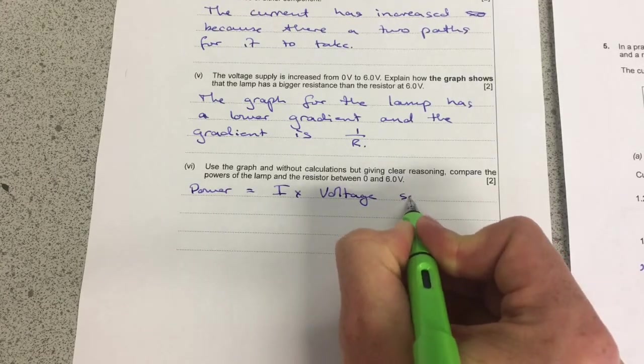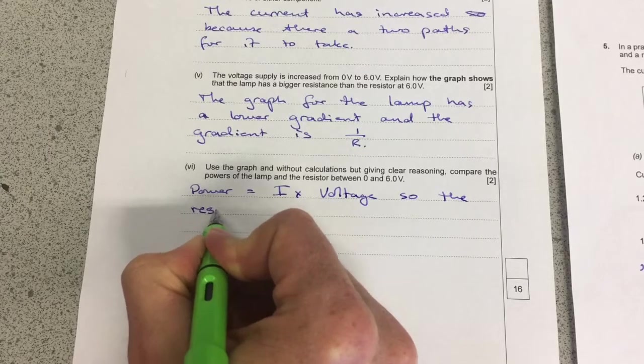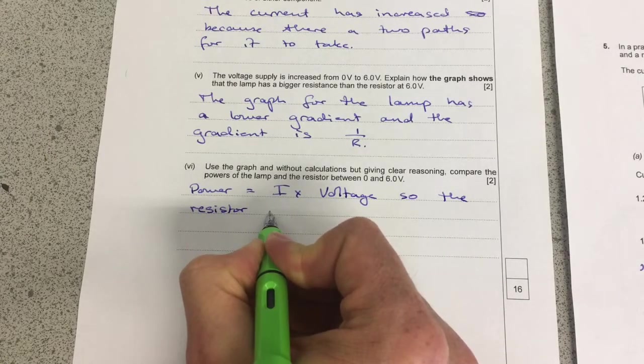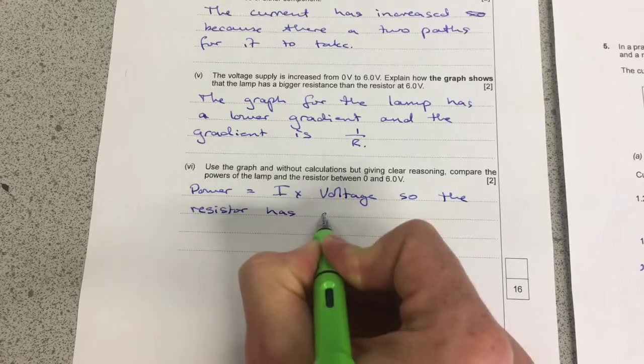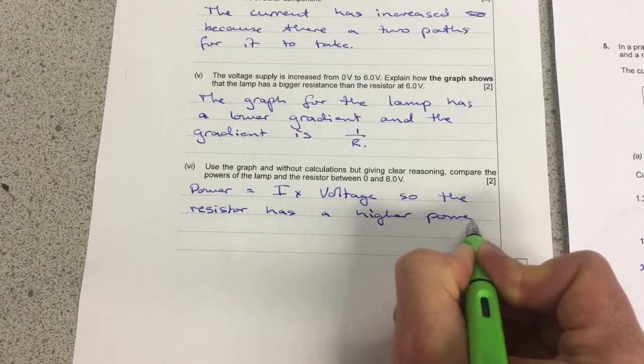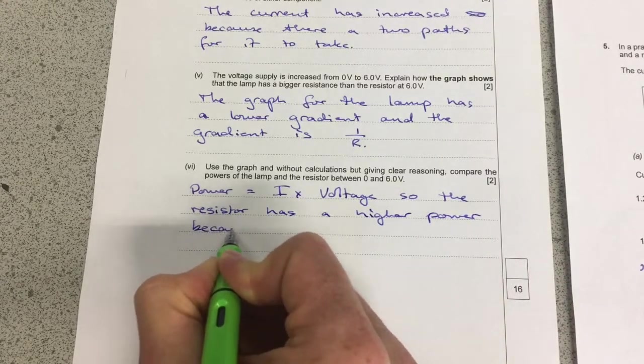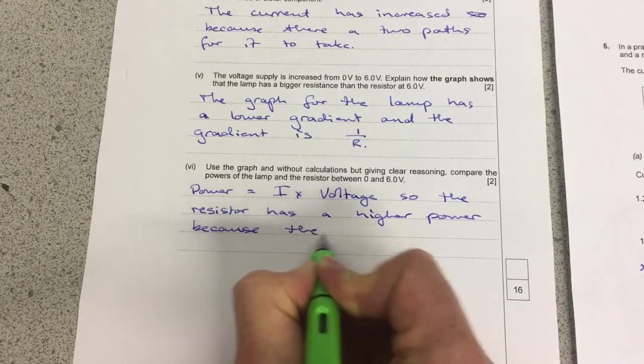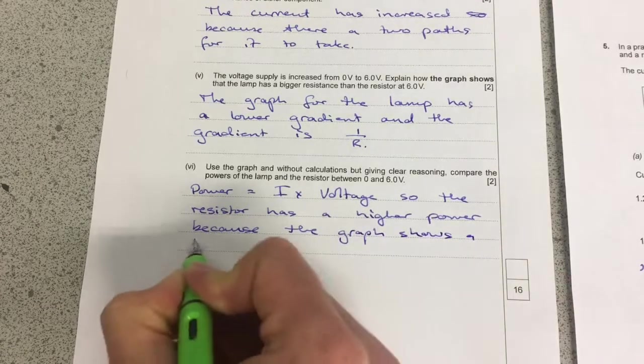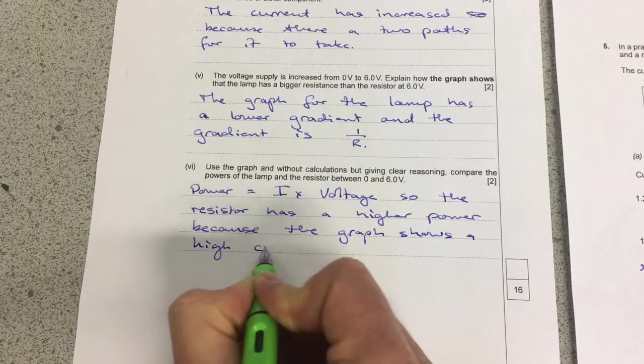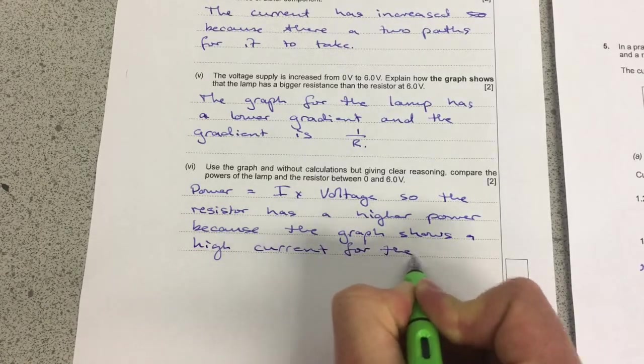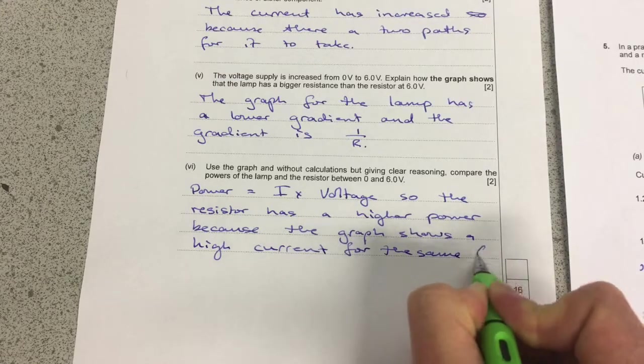So I'm going to say that power is equal to current times voltage. So the resistor has a higher power because the graph shows a higher current for the same 6 volts.